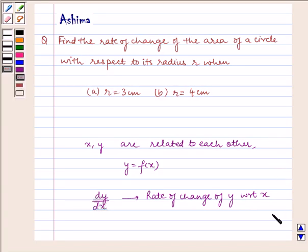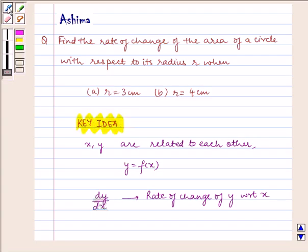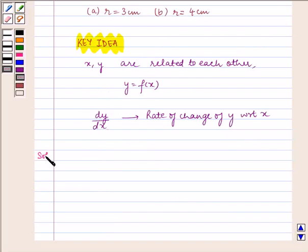This knowledge is the key idea towards this question. Now let us proceed to the solution. The area A of a circle is given by A = πr². Differentiating with respect to r, we get dA/dr = 2πr.